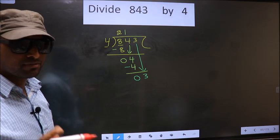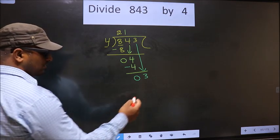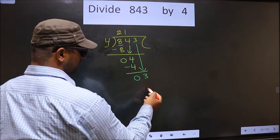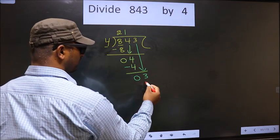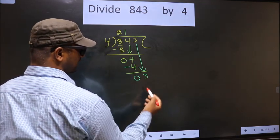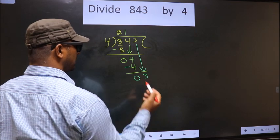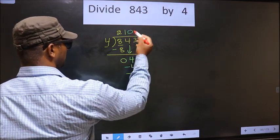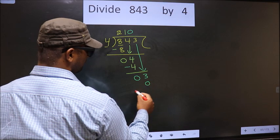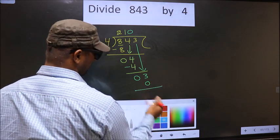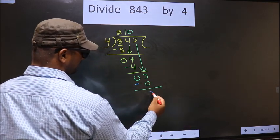Instead, what you should think of is, what number should we write here. If we write 4 here, that is larger than 3. So, what we do is we take 0 here. So, 4 into 0, 0. Now, you subtract. 3 minus 0, 3.